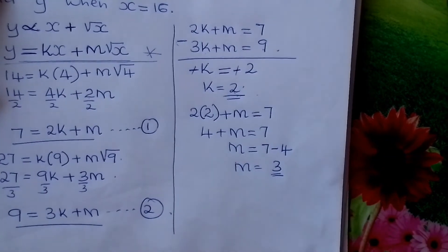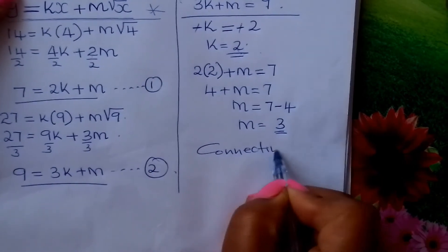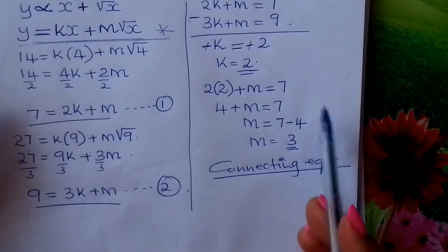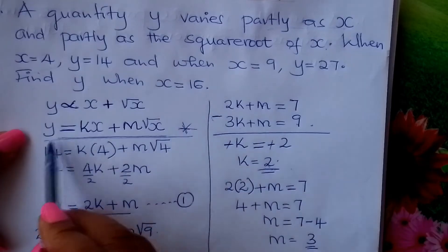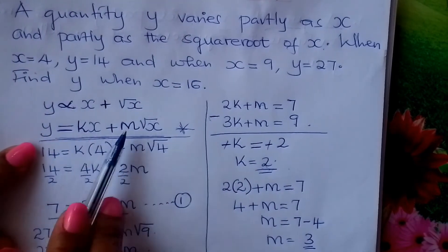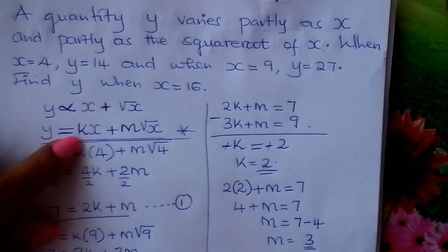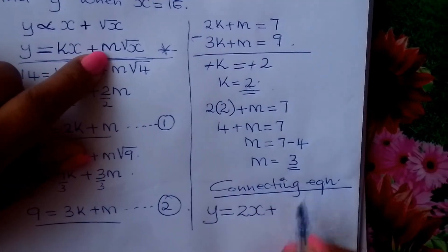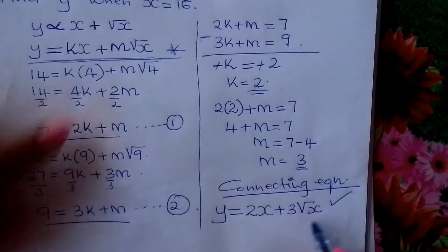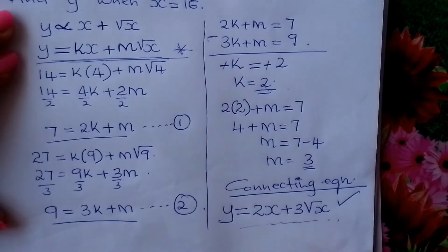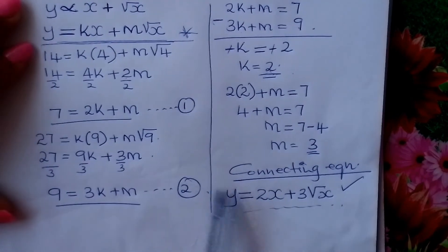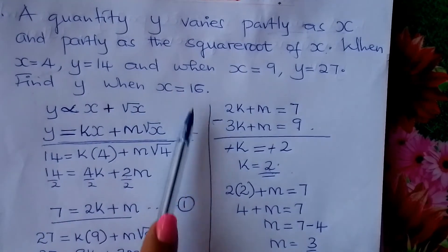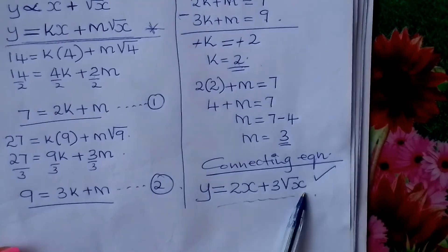We now go to what we call the connecting equation. Come and fix K and M into the original equation. Our connecting equation is: Y equals 2X plus 3 times the square root of X. This equation can now help us find Y given any value of X.